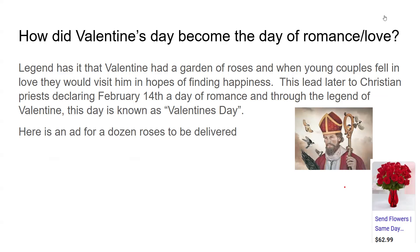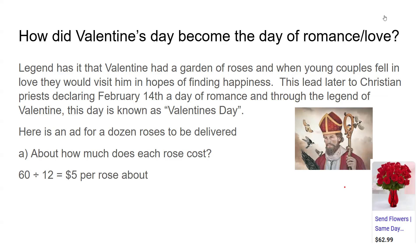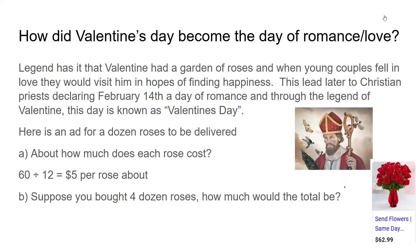For the math, here is an ad for a dozen roses to be delivered — $62.99 for 2025. About how much does each rose cost? Rounding $62.99 to $60 divided by 12 is about $5 a rose, or roughly $5.25 to be more accurate with tax. Suppose you bought four dozen roses — how much would the total be? 4 times $62.99 equals $251.96.